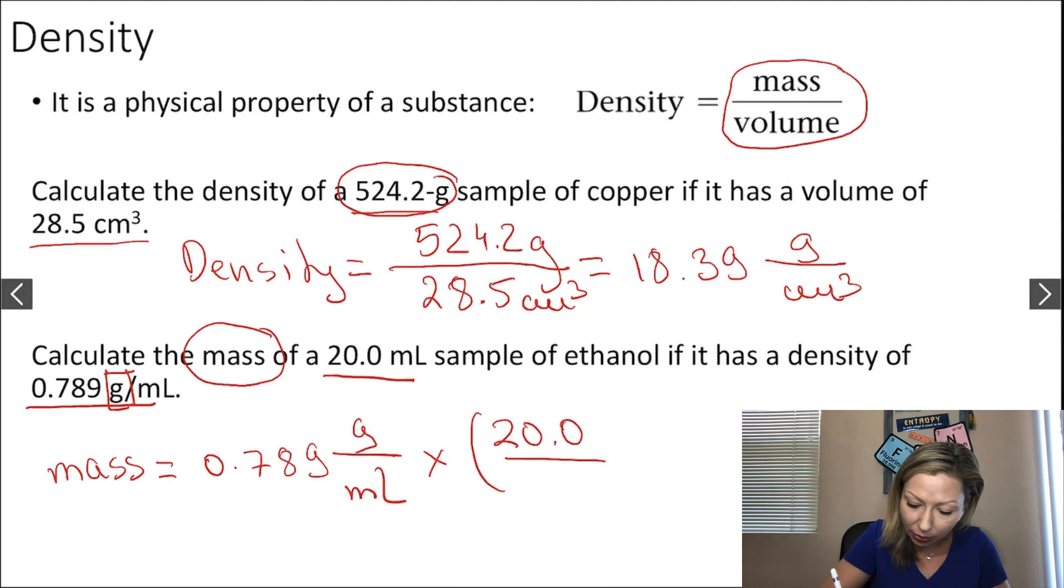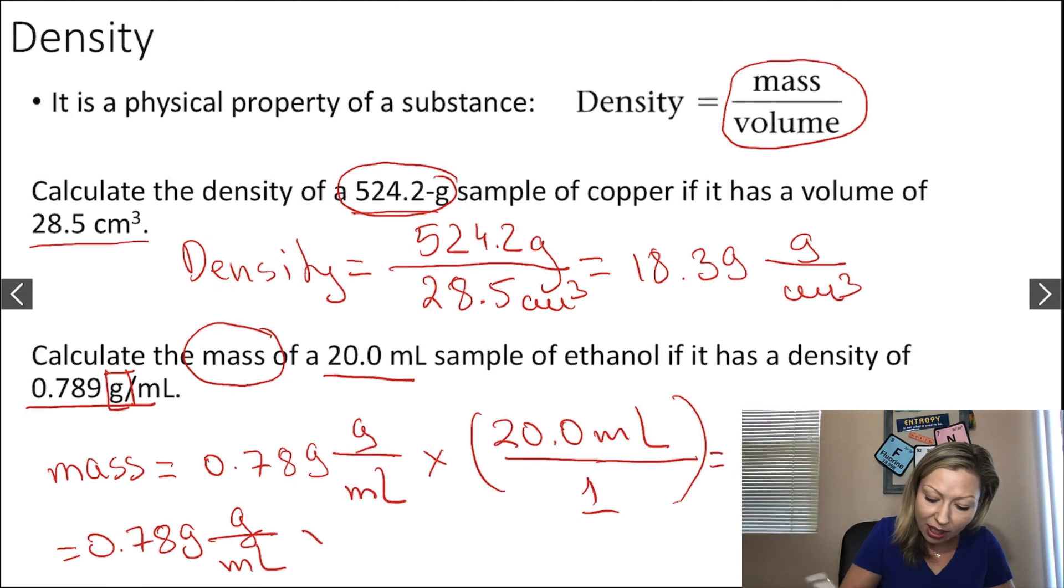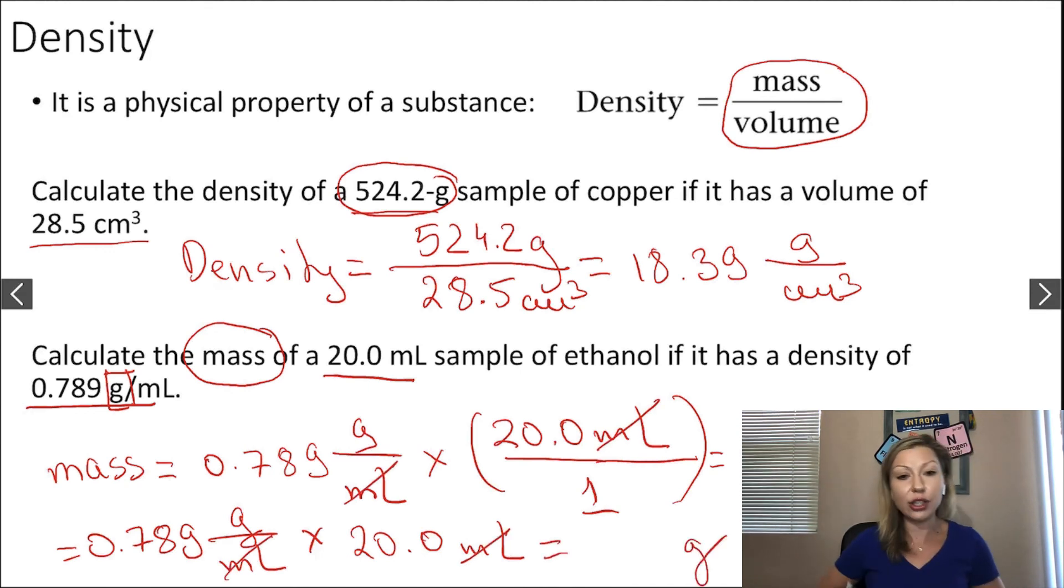You can also simply write this out as follows: 0.789 grams per milliliter times 20.0 milliliters. The milliliters will cancel out, and our final unit is grams. If you do this calculation, you get 15.8 grams.